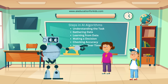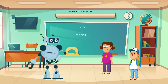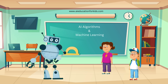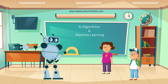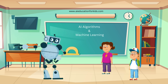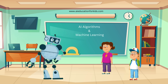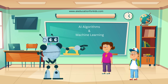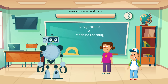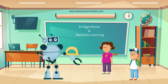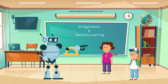Exactly. You both did a great job understanding the steps in an AI algorithm. Now let's talk about machine learning and algorithms and how these two are related. Machine learning is a type of AI that lets computers learn and make decisions on their own. Algorithms are the tools used in machine learning to analyze data, learn from it, and make predictions. So algorithms are like the brain of machine learning? Exactly, Ethan. Algorithms process the data, learn patterns, and help the computer make decisions.